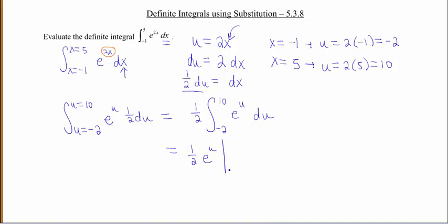And now, this is the nice part about changing your endpoints over to u's, is now I can just evaluate it from negative 2 to 10, and not worry about plugging my x or my u back in. Because remember, these endpoints are in terms of u, not x.